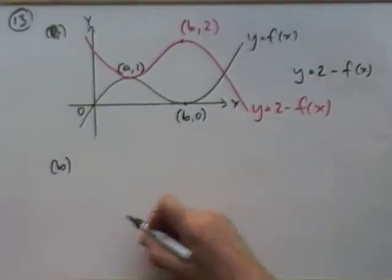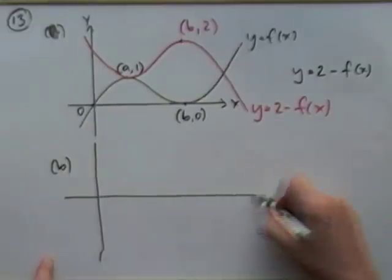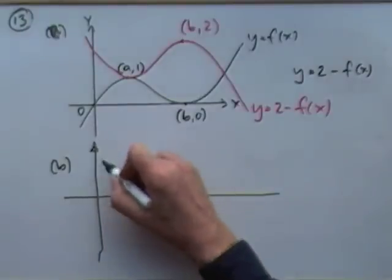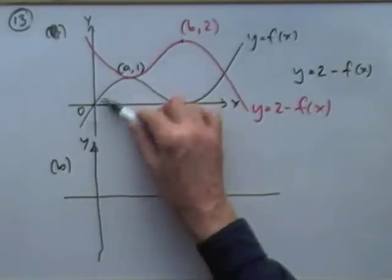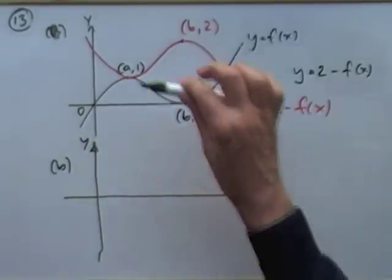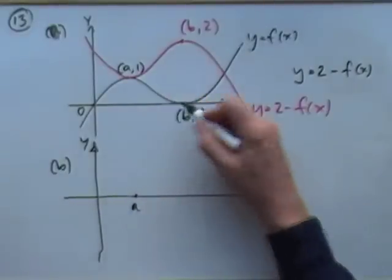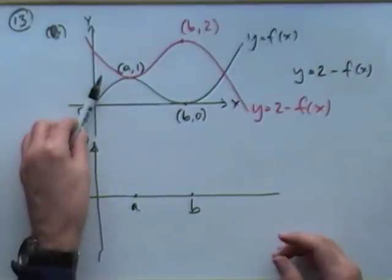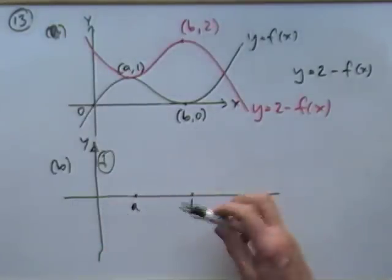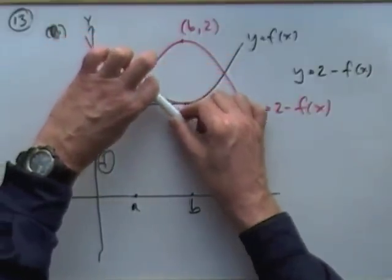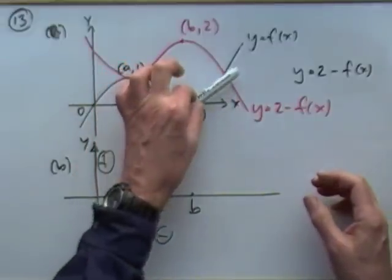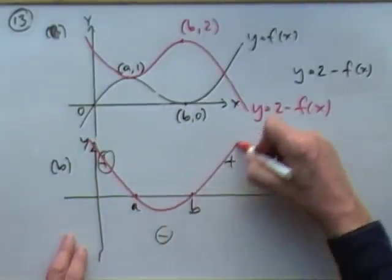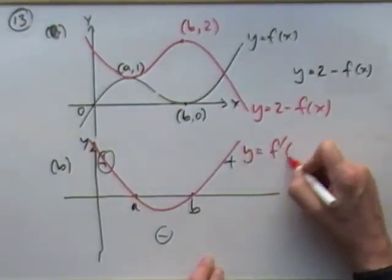Part b: draw the graph of the derivative of this one. The graph of the derivative means you'll be plotting the values of the gradient — nothing to do with the original y coordinates. The gradient was zero at a and zero at b. Before a, gradients were positive; after a, negative; after b, positive again. So it'll be something like that — that'd be the graph of y equals f-dashed of x.